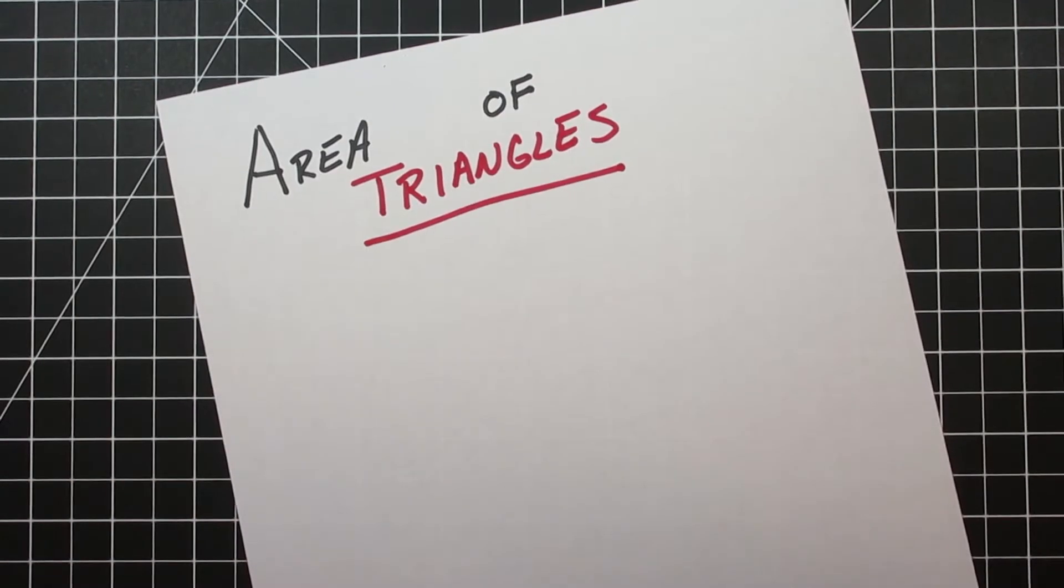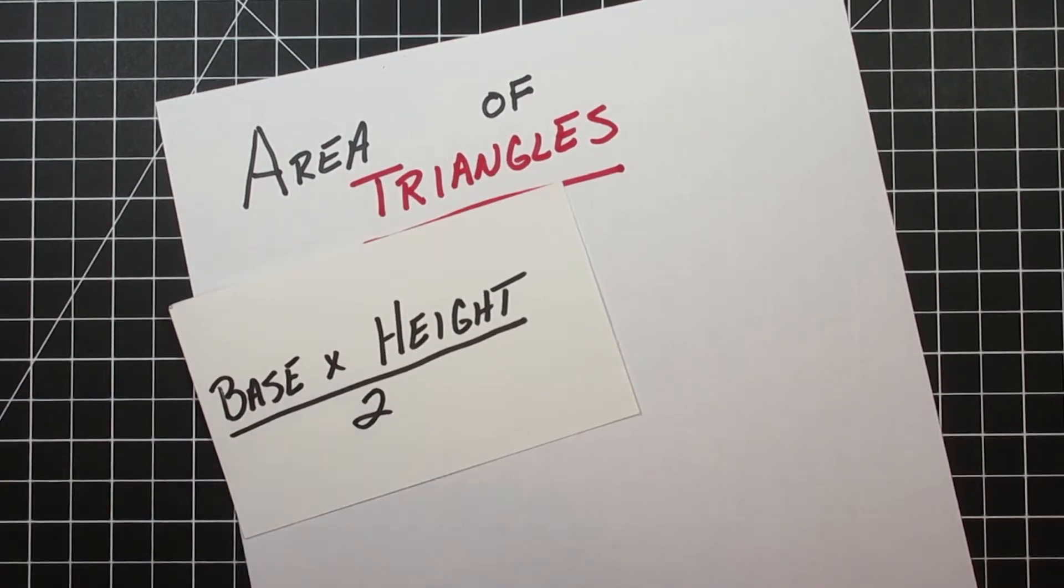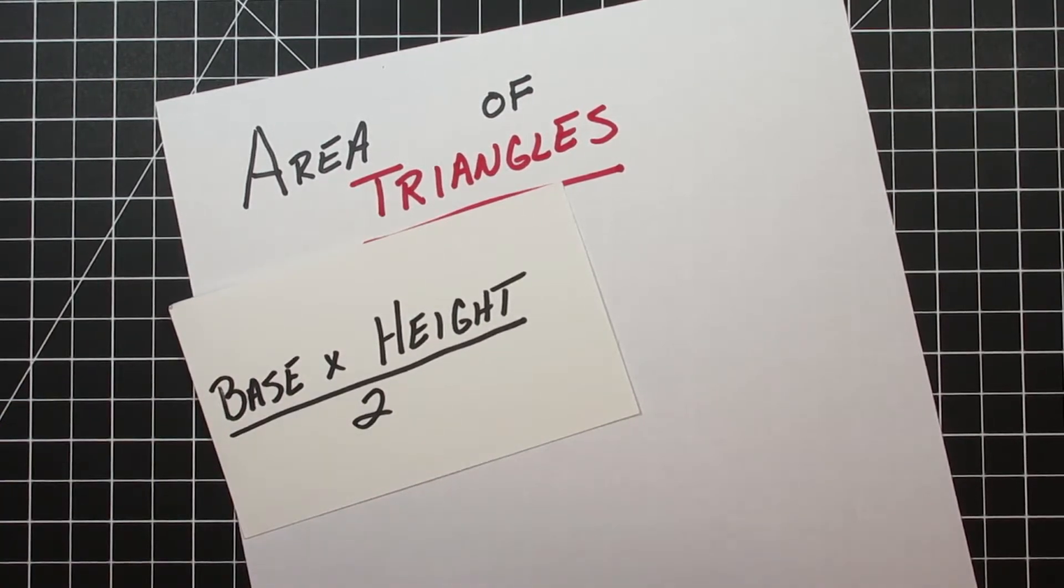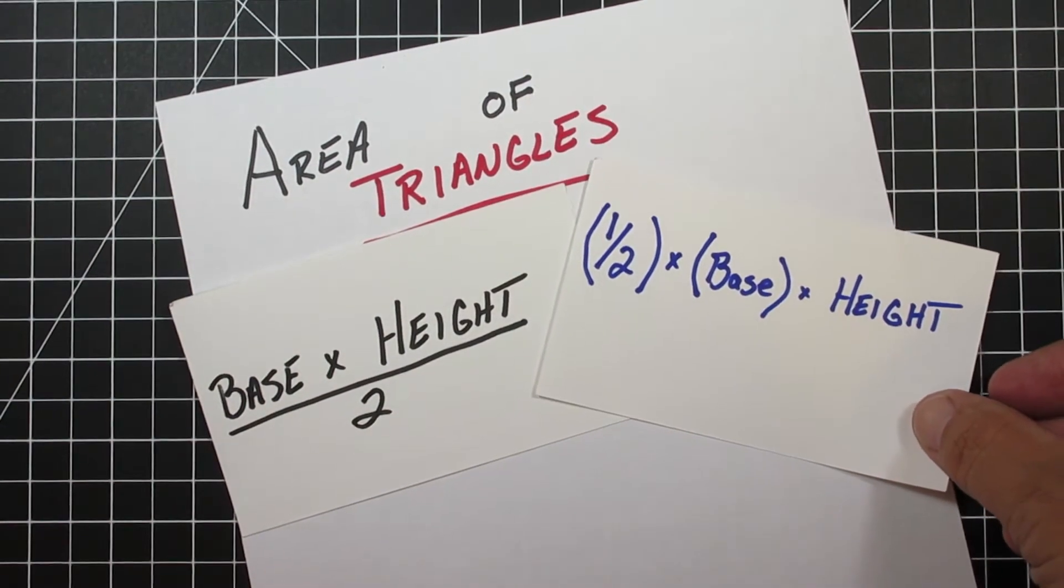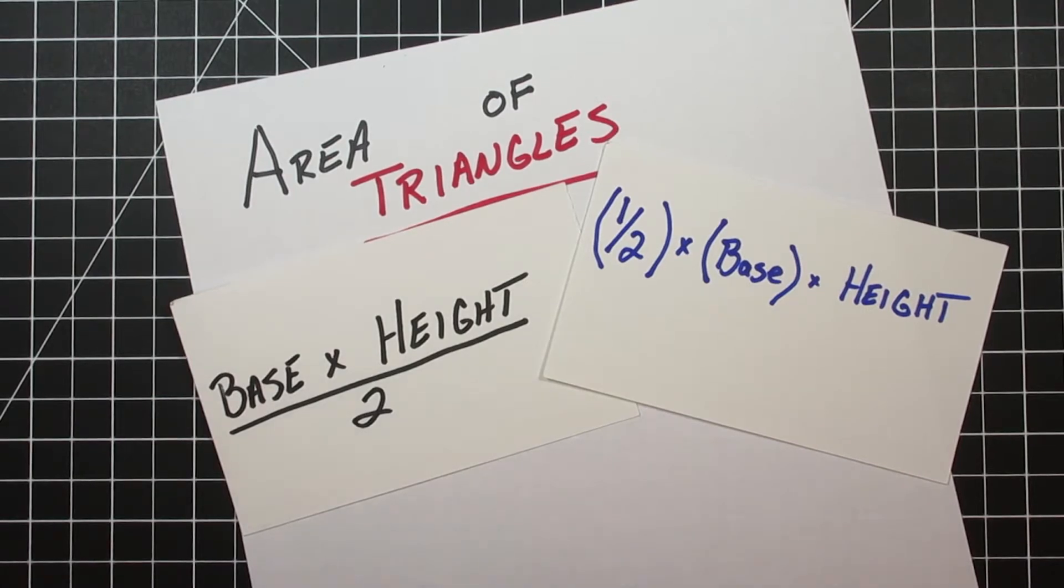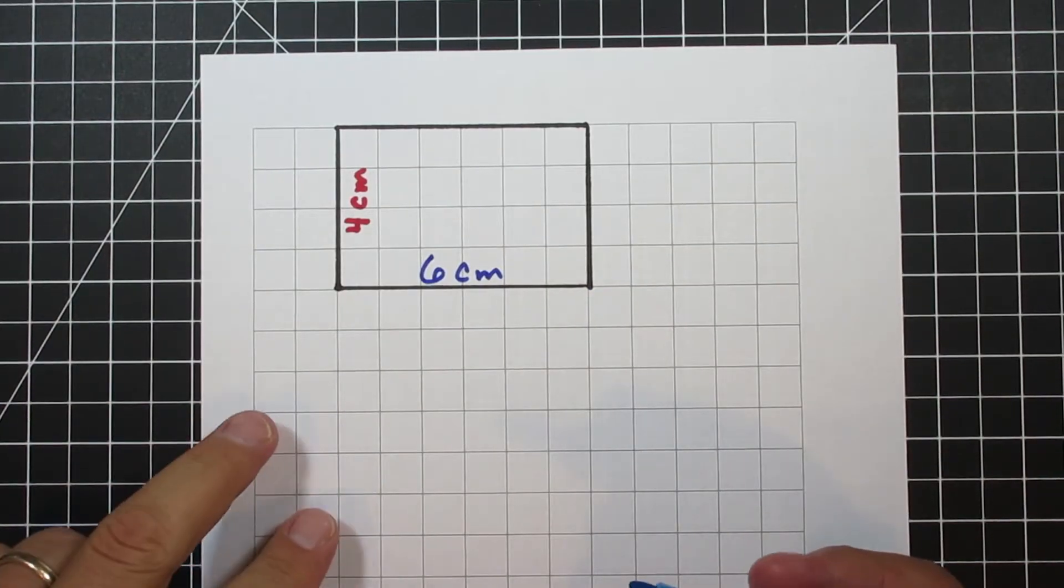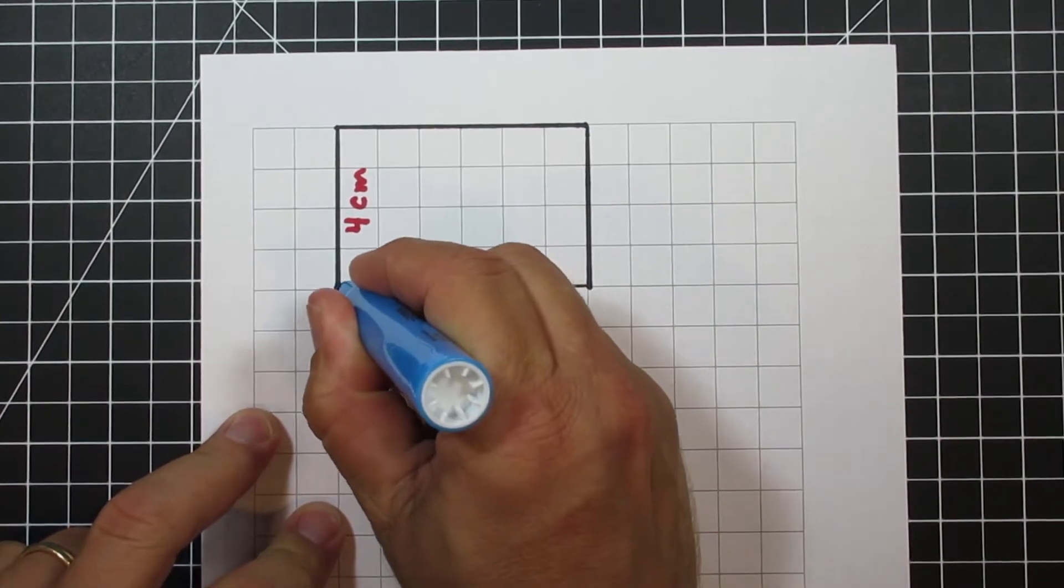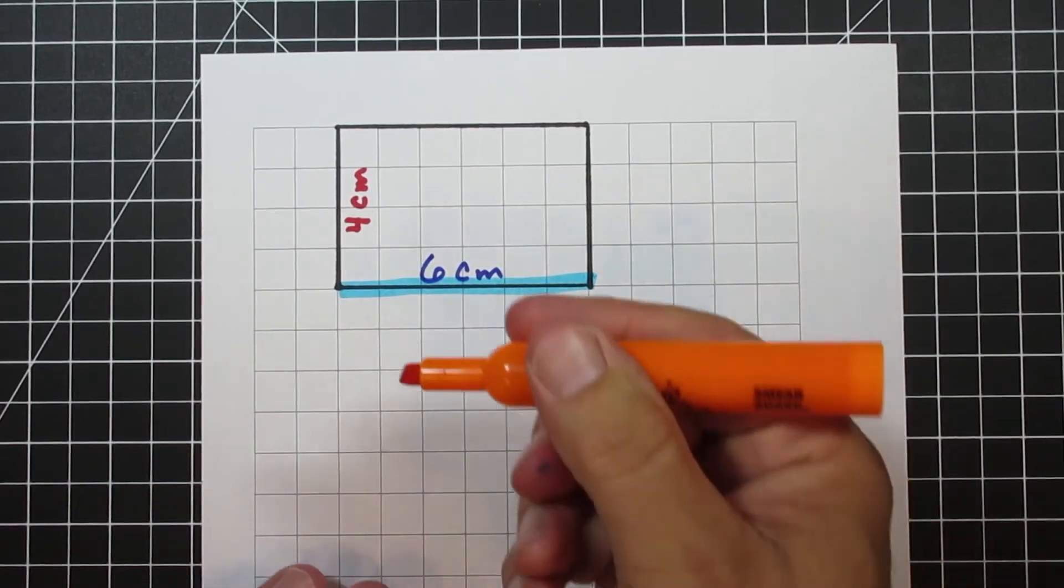With triangles there's two different formulas that we can use to find the area. The first is base times height divided by 2. The second formula is 1 half times the base times the height. Now both of these are the exact same formula. If you divide by 2 or if you multiply by 1 half, you get the same answer. A question I get a lot is why do we have to divide by 2 or multiply by 1 half to find the area of a triangle?